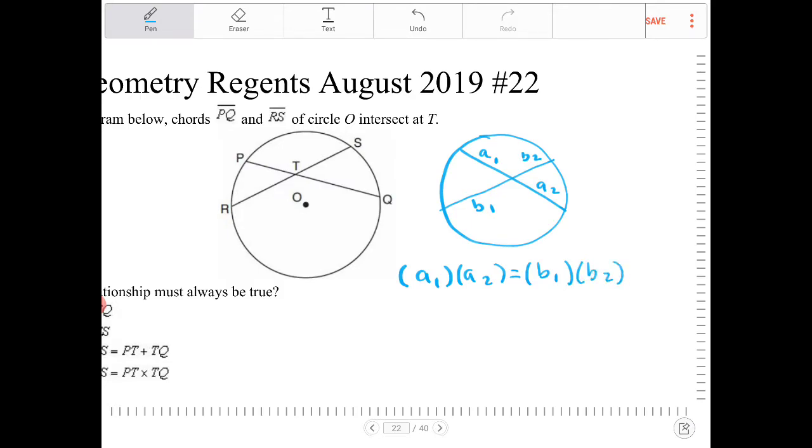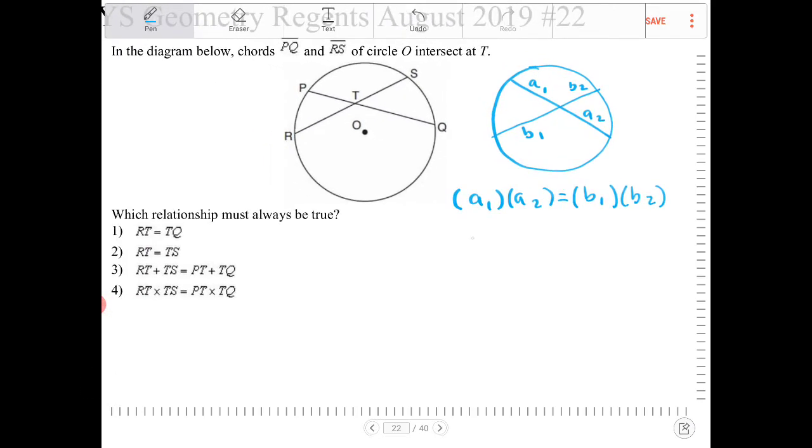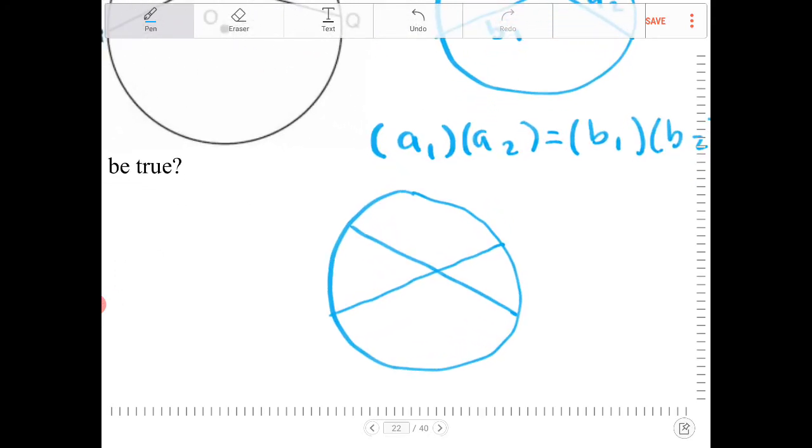So this is involving the lengths of the chords. But there's also something true about the angles that are formed. So the angles that are formed between the two intersecting chords is that, let's say if I call this angle, this arc here B,